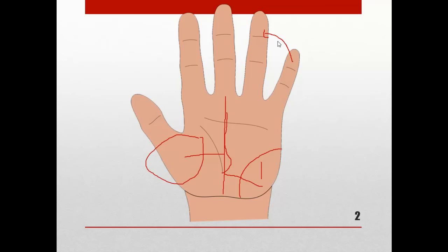Your bracelet - this is called your bracelet. If the bracelet is quite good and you have three proper lines that are unbreakable and quite clear and visible, these lines you will generally find two lines in most cases.